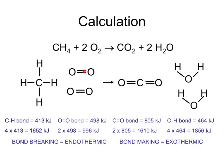Because we're bond breaking, that would be endothermic — energy required. But of course we also make new bonds. Making the two carbon-oxygen double bonds gives 2 times 805 kilojoules, or 1,610 kilojoules. And making the four oxygen-hydrogen bonds gives 4 times 464, or 1,856 kilojoules — that energy would be given out. Whether the reaction is overall exothermic or endothermic depends on the relative size of the energy given out and the energy taken in.